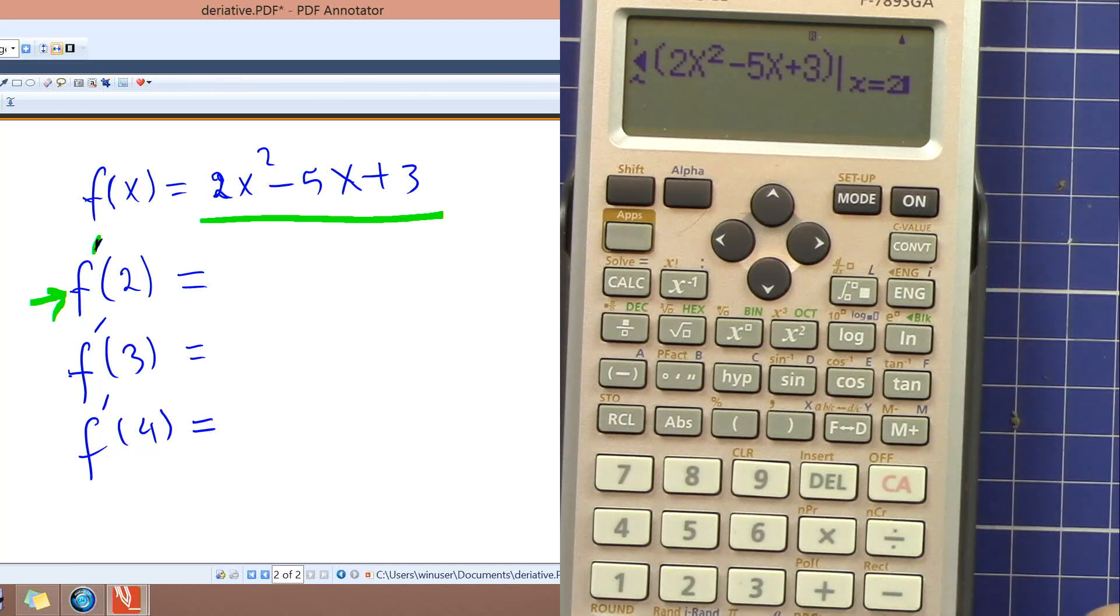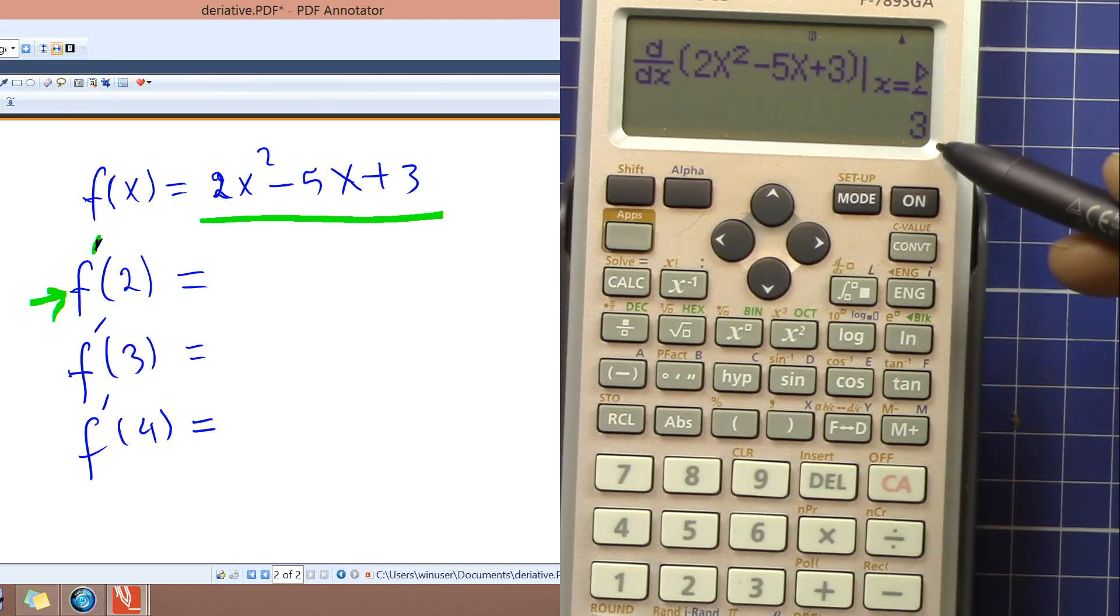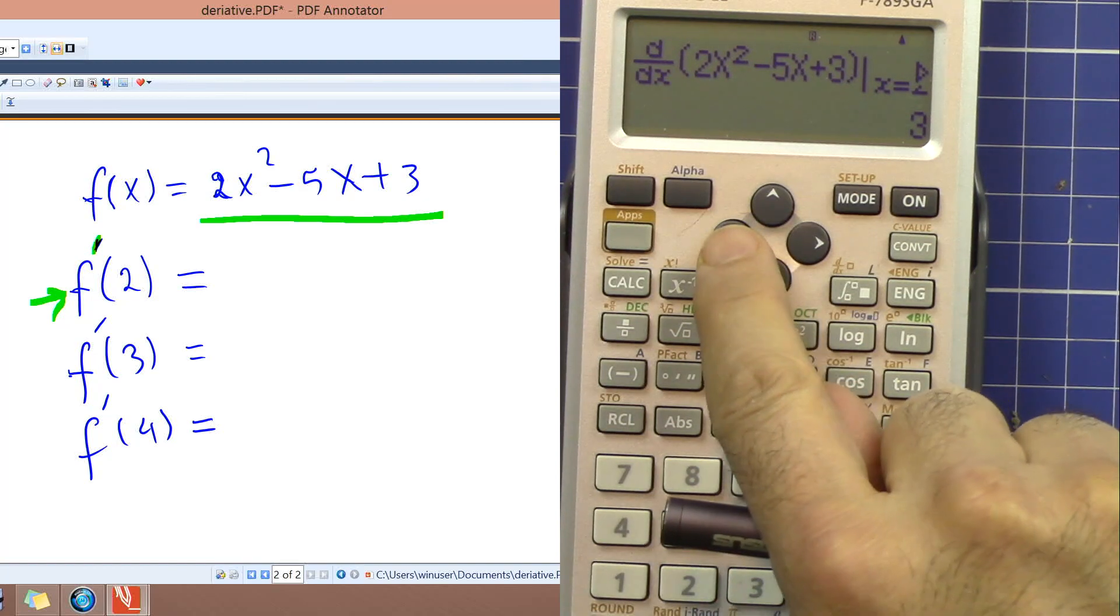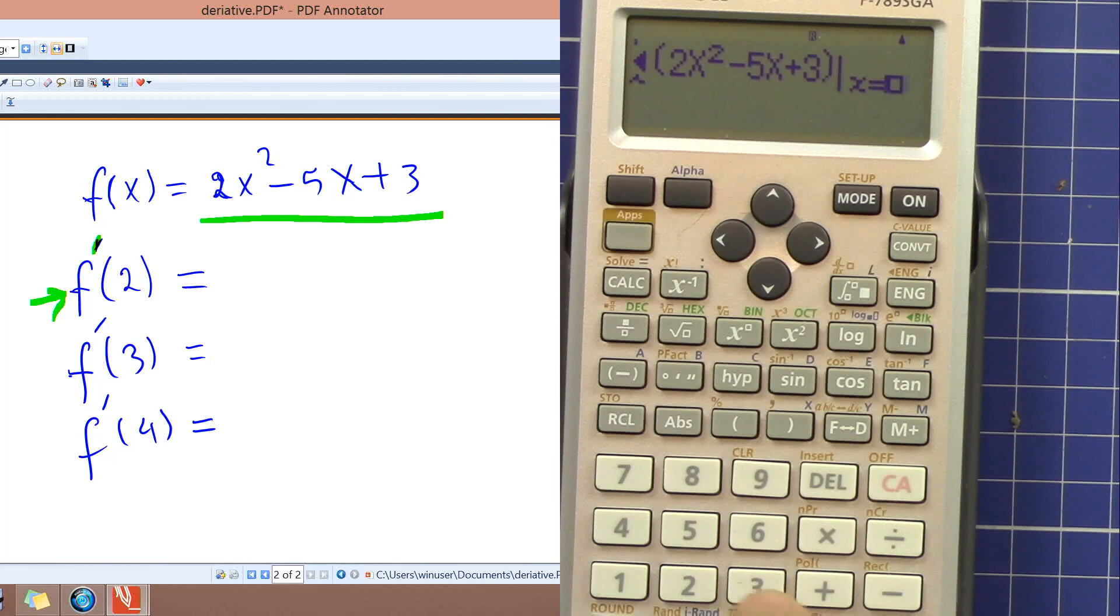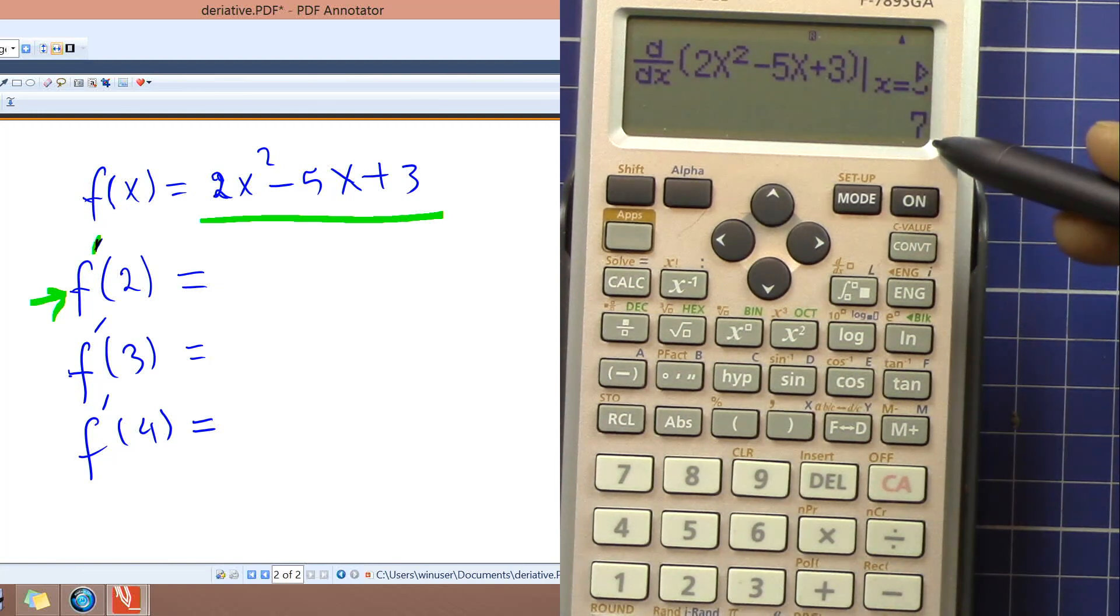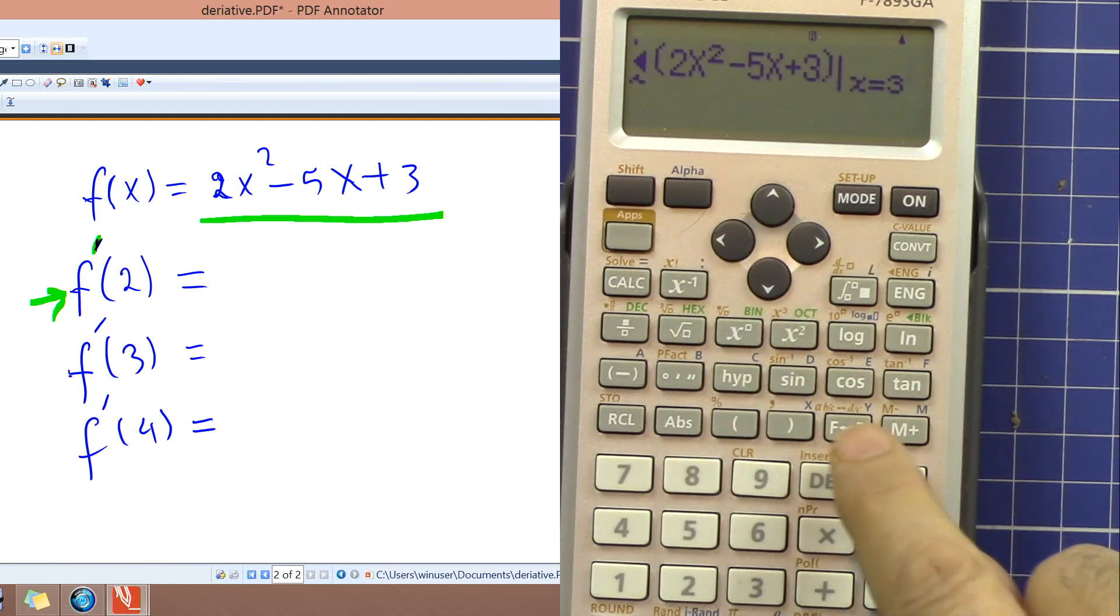Now to do again with another value, just press left arrow, go there, change it to 3 and evaluate it. So we go to the right, now we got 7. Go back and 4, so we got another value.